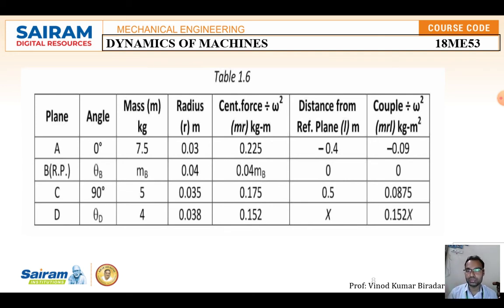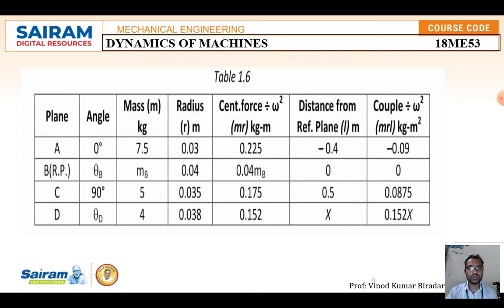Form the tabular column: plane A, B, C, D; angles 0°, theta B, 90°, theta D; masses 7.5, M_B, 5, 4 kg; radii in meters 0.03, 0.04, 0.035, 0.038. Centrifugal force = M×R: A gives 0.225, B gives 0.04×M_B, C gives 0.175, D gives 0.152. Distances from reference plane: −0.4, 0, 0.5, X. Couple (M×R×L): A gives −0.09, B gives 0, and so on.